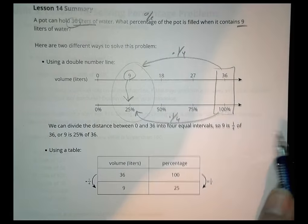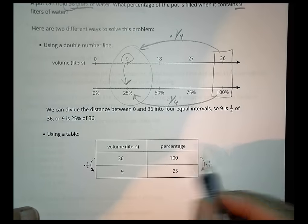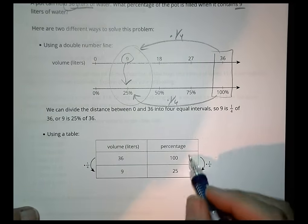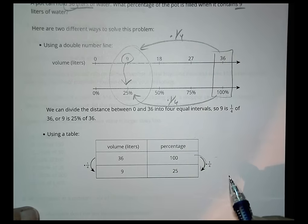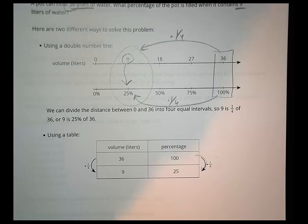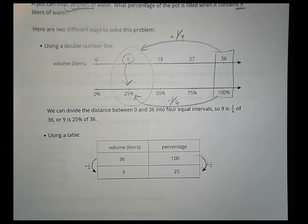We can also use a table and do the same idea and say, how do I go from 36 to 9? We multiply by 1 fourth. And I do the same thing for my percentage side of the table and get 25 there. A couple different approaches for solving percentage problems. You just have to decide which one is going to work best for each situation. Let's pause there. Spend some time on your homework. We'll come back and check it together in just a moment.